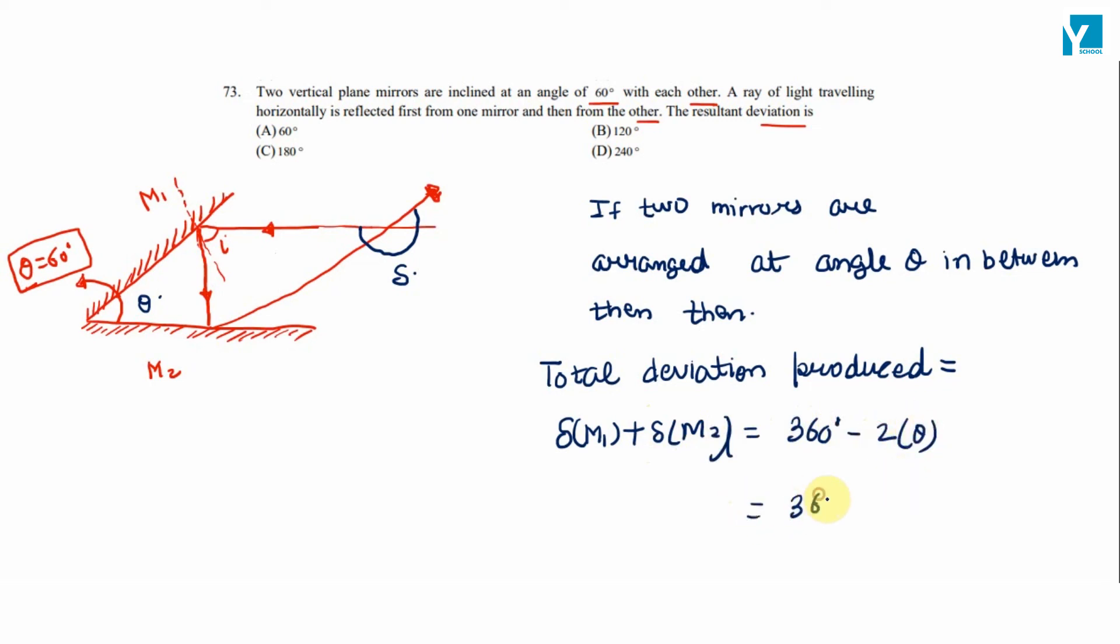So this is equal to 360 minus 2 times 60 degrees. This comes out to be 240 degrees. So as per the options, option D is the right answer.